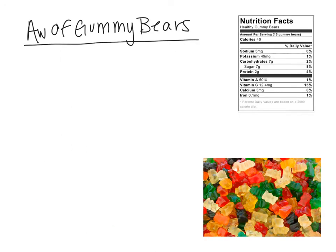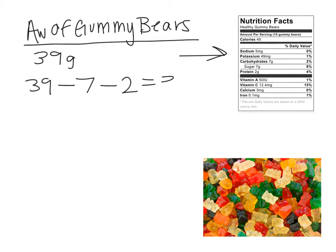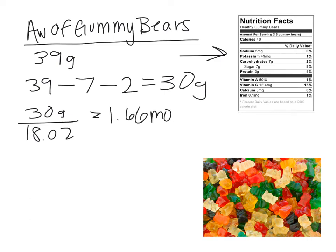Let's do an example calculation with 39 grams of gummy bears. From the nutrition facts, we have 39 grams total, with 7 grams of sugars and 2 grams of protein, which leaves us with 30 grams of water. Dividing 30 grams by the molecular weight of water gives us 1.66 moles of water. We can then compare this to the moles of sugar.